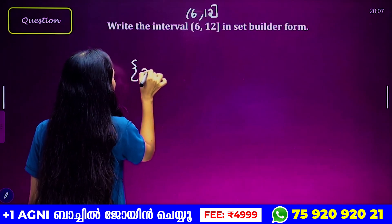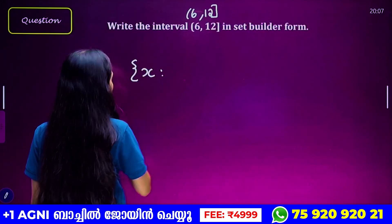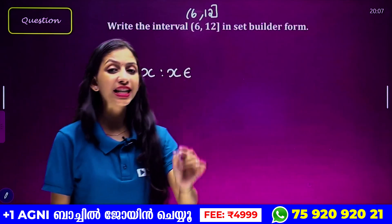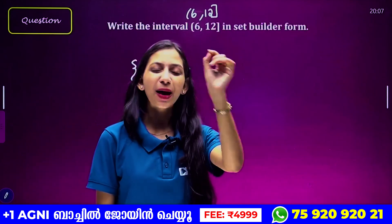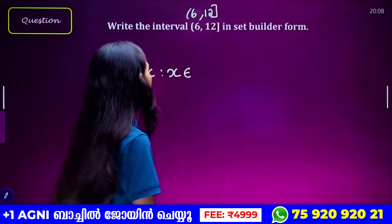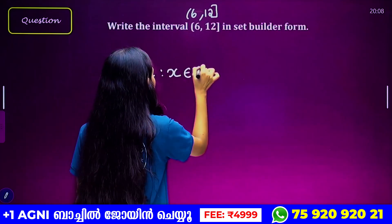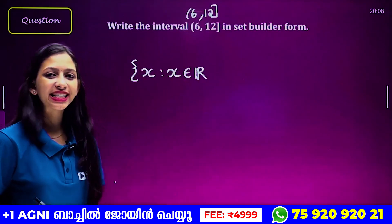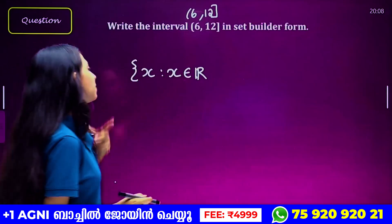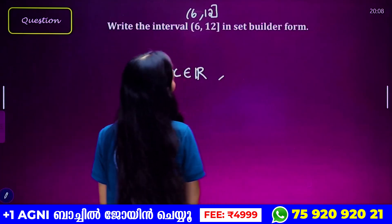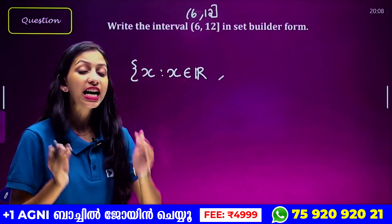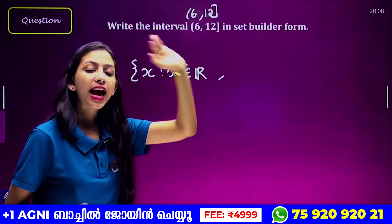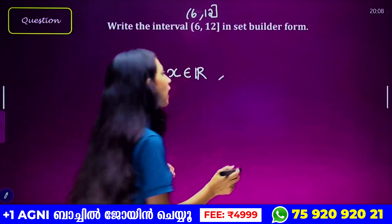6 to 12 is open, close to 12. This is the set builder formula. We say: set of all x such that x belongs to R. Intervals are subsets of real numbers, so we have x belongs to R. Set of all x such that x belongs to R, comma, what is the condition — x is between 6, open 6, close 12.